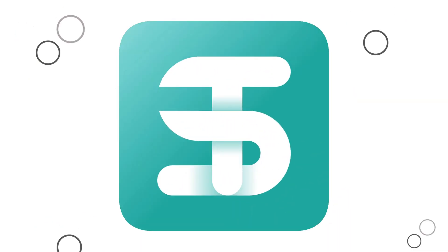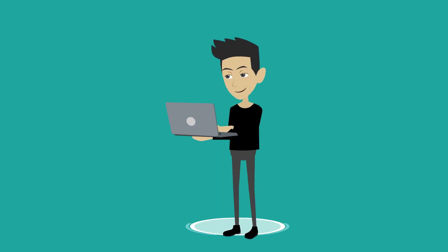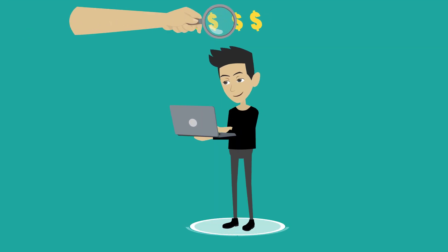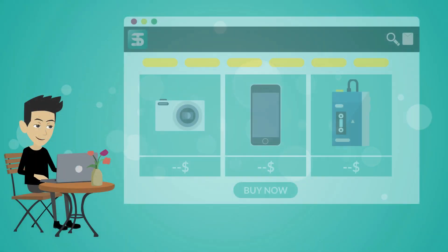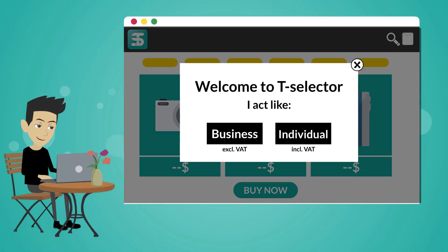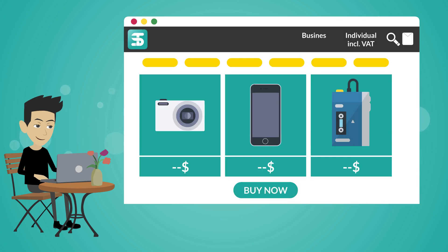Say hello to T-Selector, the best dual pricing app out there. With T-Selector, you let your customers choose how they want to see prices, with or without VAT. Each customer who enters your site will be able to select this option from an optional pop-up when entering the site, or a handy button in the header section.